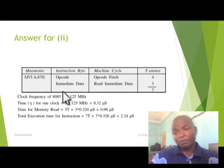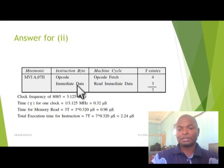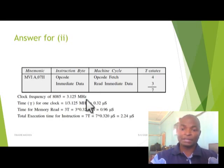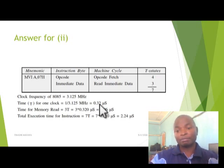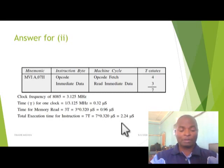Similarly, for MVI A,07H — we are moving the immediate data 07H to register A or the accumulator. The first opcode fetch takes 4 T-states. Then reading the immediate data into the accumulator takes 3 T-states. So the total is 7 T-states. To calculate the execution time, we use one over the frequency to get the T-state duration, then multiply the total number of T-states by the time taken by a single T-state: 7 × 0.320 microseconds = 2.24 microseconds.